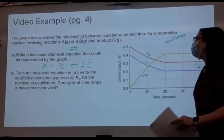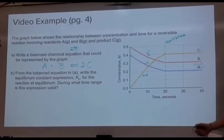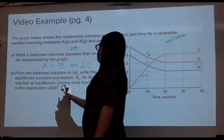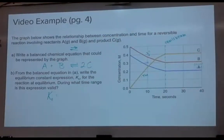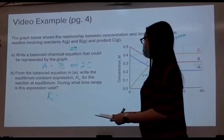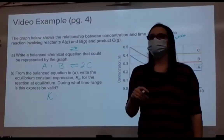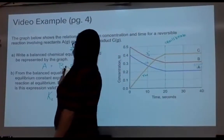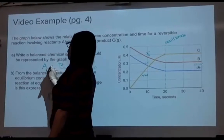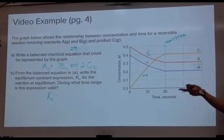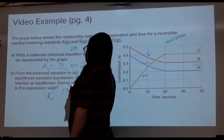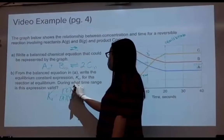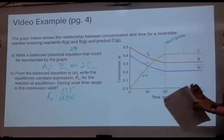Part B asks us to write the equilibrium constant expression Kc for the reaction at equilibrium. Equilibrium constants are capital K. It's products over reactants. These are all gases, so we can include them — you can only include gases and aqueous solutions. So Kc equals the concentration of C squared — because of the coefficient 2 — over the concentrations of A and B. That's our Kc expression.